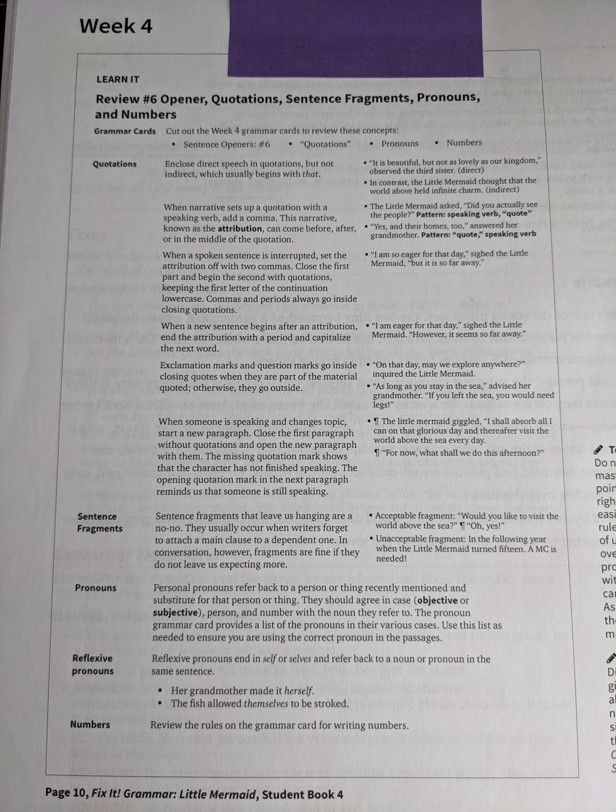Reflexive pronouns are another kind of pronoun. Reflexive pronouns end in self or selves, and they refer back to a noun or pronoun in the same sentence. Her grandmother made it herself. The fish allowed themselves to be stroked. Review the rules on the grammar card for writing numbers. Spell out numbers when written as one or two words. Spell out ordinal numbers, first, second, third. Ordinal means what order they come in. Use numerals for dates. January 1st would be January 1. Use numerals when mixed with symbols. That would be like 40%, 4-0% symbol. Hyphenate compound numbers from 21 to 99. And hyphenate telephone numbers. 972-822-3416, for example.